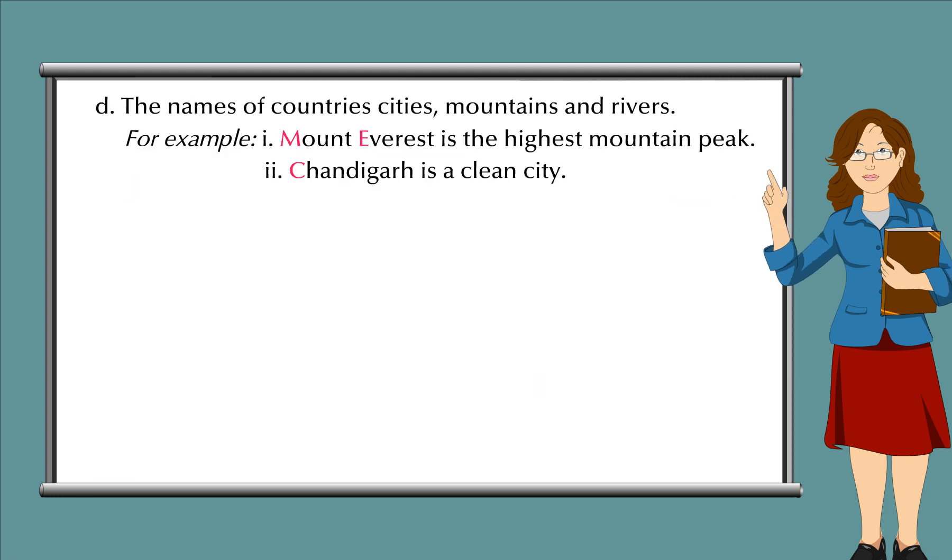D. The names of countries, cities, mountains and rivers. For example, Mount Everest is the highest mountain peak. Chandigarh is a clean city.